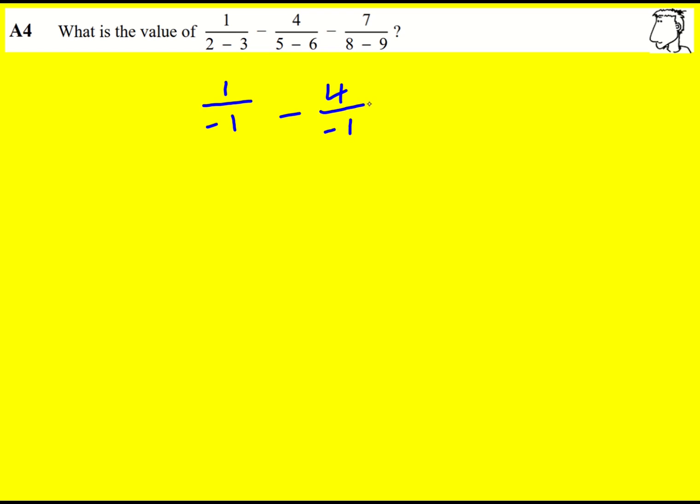This will be 4 divided by minus 1 for the same reasons, and then 7 over minus 1.